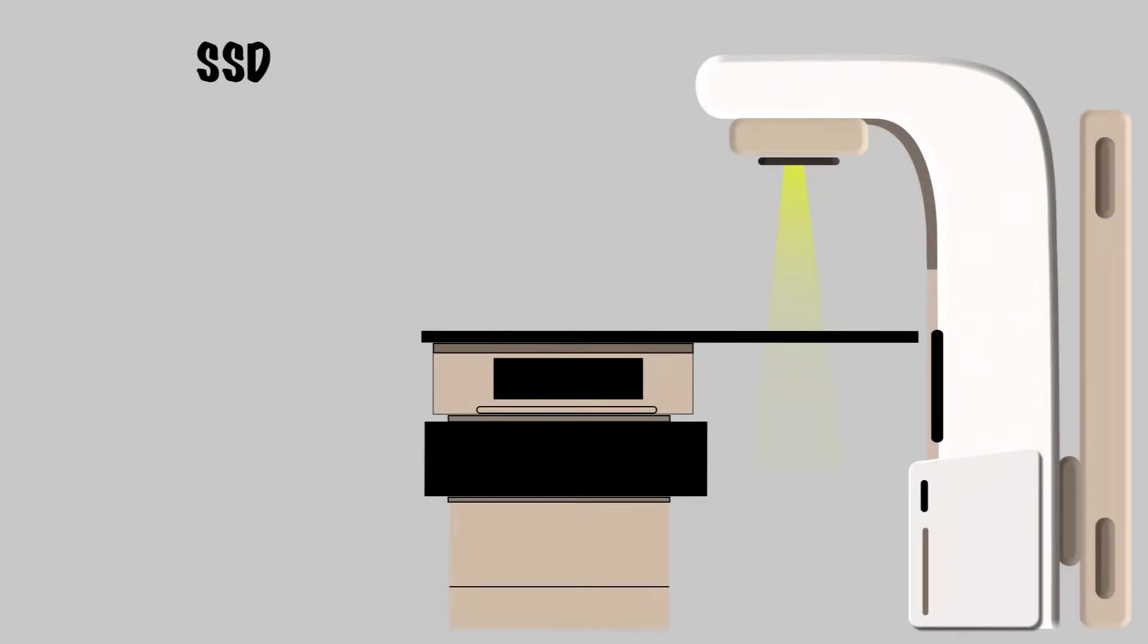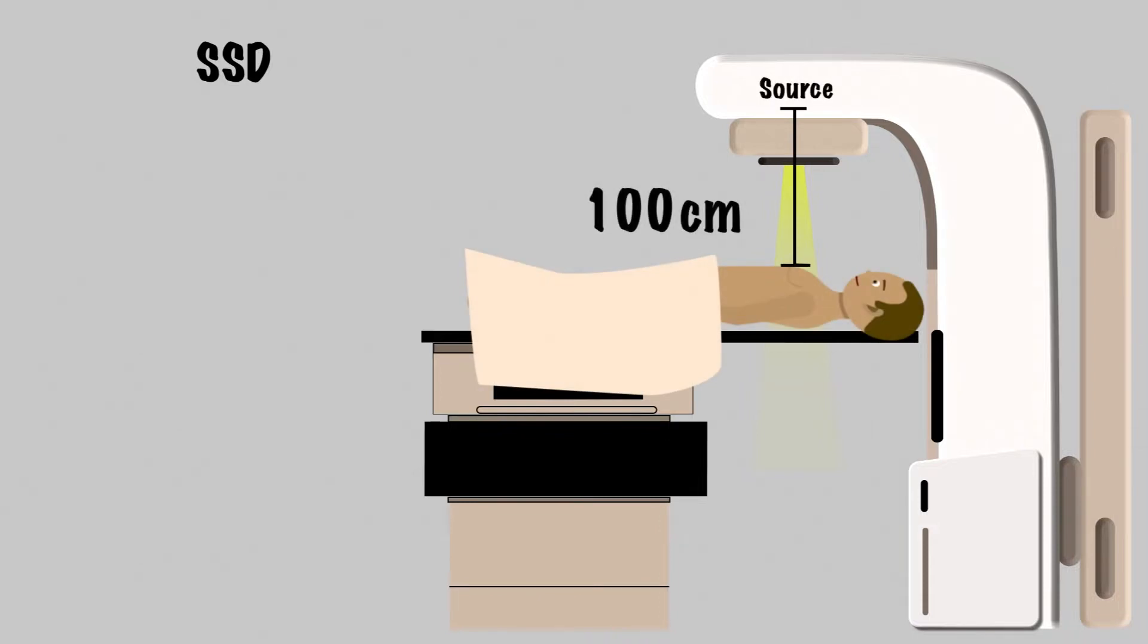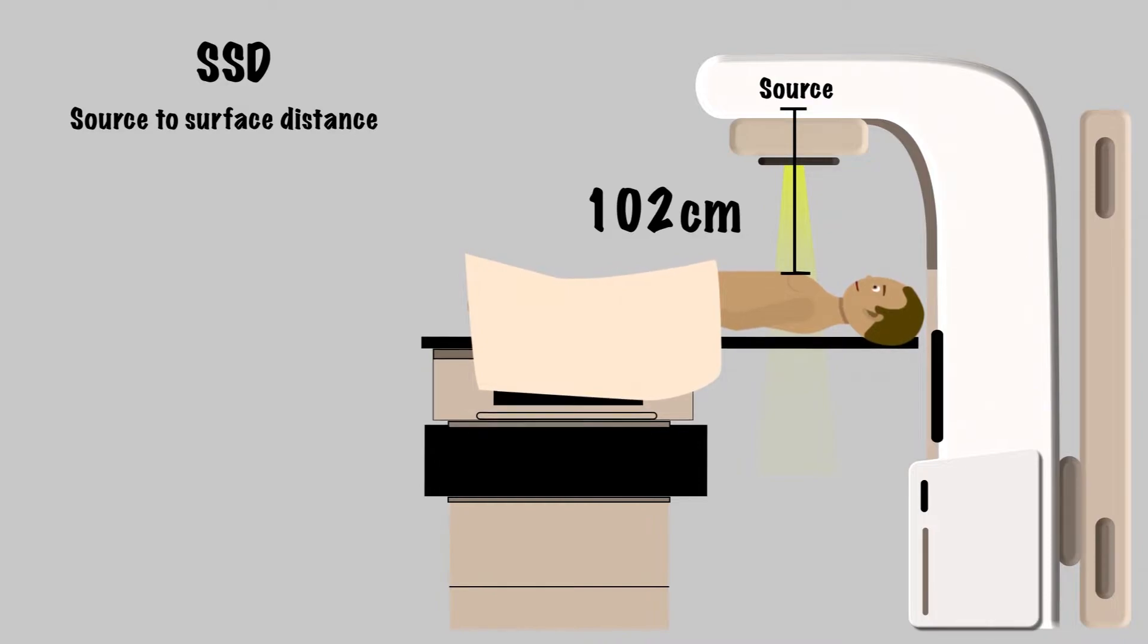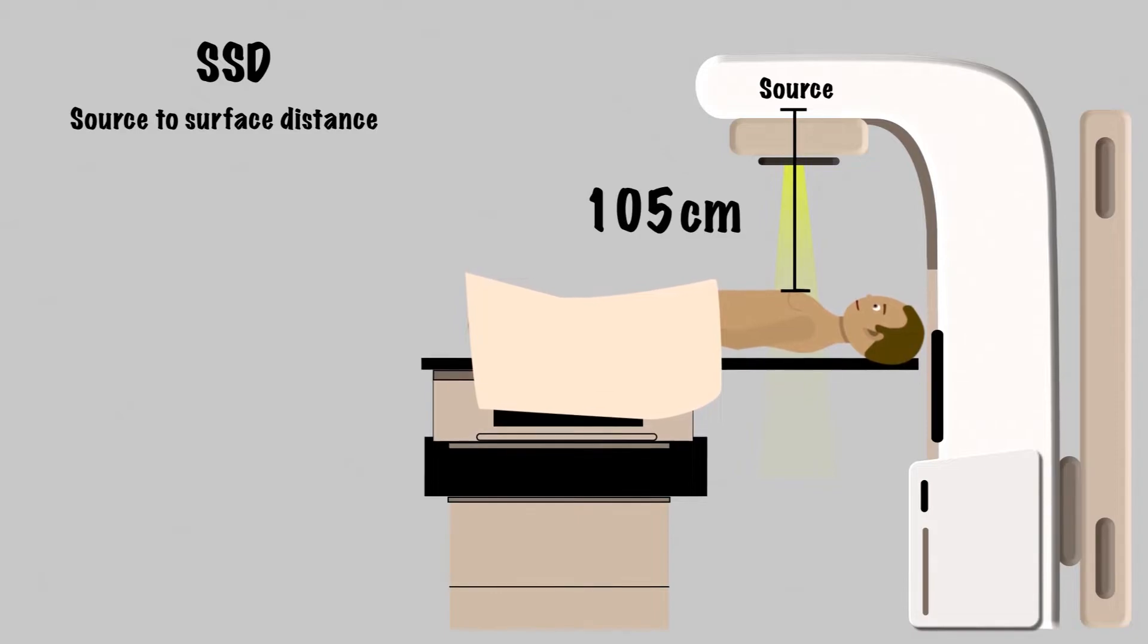The next factor to consider is SSD, or source-to-surface distance. This refers to how far the source of the radiation is from the skin surface of the patient. Why does this matter? Doesn't the beam interact similarly along the whole path whenever it encounters the patient? No.